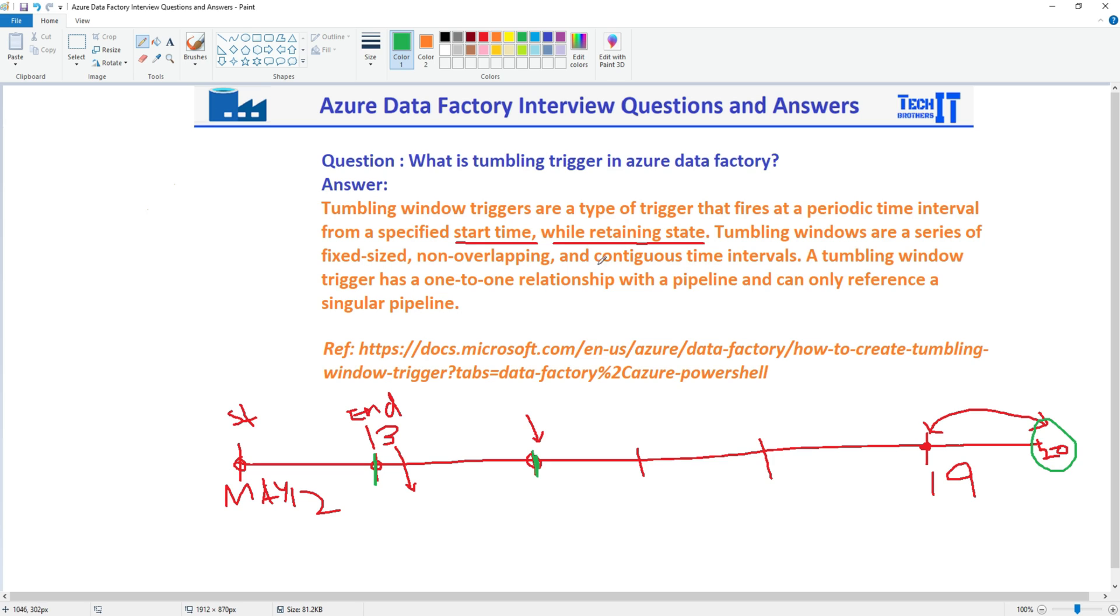A continuous time interval, so that's important. A tumbling window trigger has one-to-one relationship with the pipeline and only one reference, a single pipeline. As you notice that it is keeping track of the time for which it has run and what will be the next time interval, that's related to the pipeline.